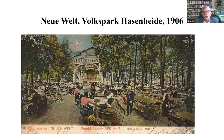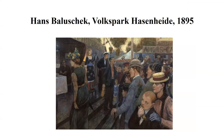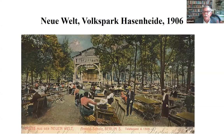When Biberkopf and his lady friend go out for entertainment, they go to a place pretty far to the south, called the Volkspark Hasenheide — an institution called Neue Welt, which was a big amusement park founded in 1880 with a lot of beer gardens and other types of amusement. So if you have images of cabaret or things like that, that is not part of Franz Biberkopf's world.